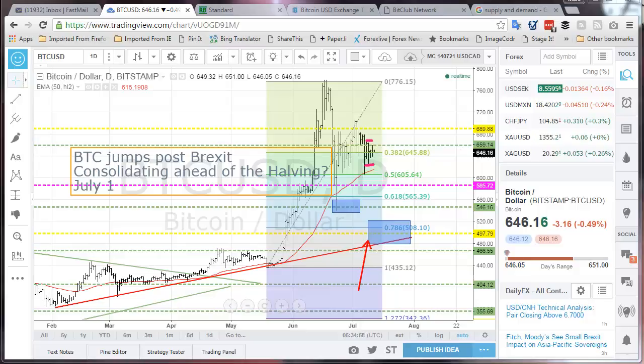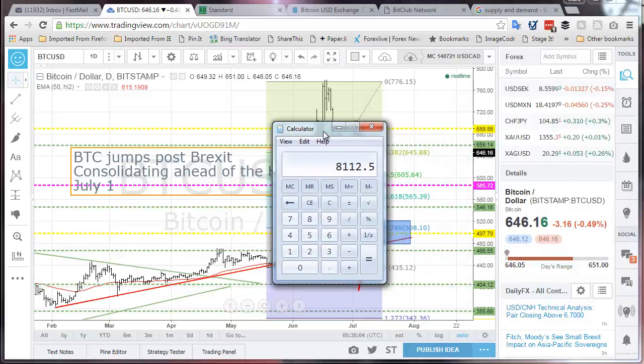And what does that reduction of supply actually turn out to is that magical number there of 8112, which is what the current value of a Bitcoin block is. The 12 and a half Bitcoin that one receives for processing a block is now worth 8112. If you can imagine running a business where your revenues went from twice that, from 16,225 per block, to 8112, you would be making some decisions.